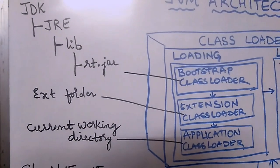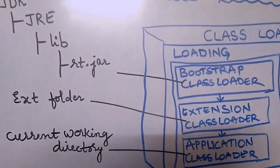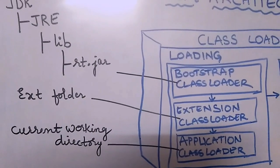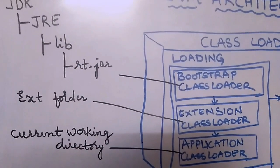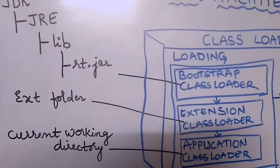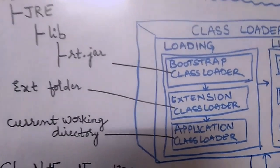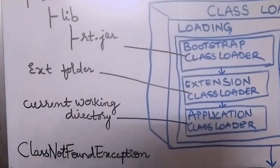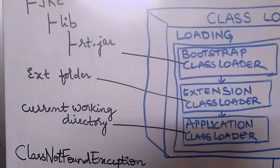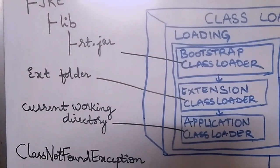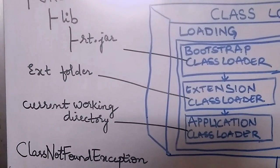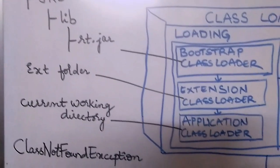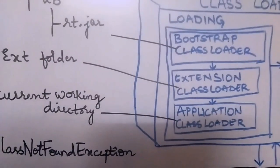The extension class loader is responsible for loading all the classes in the ext folder — inside lib there is an ext folder, and all the classes available there will be loaded by the extension class loader. The third one is the application class loader, also called the system class loader, and it is responsible for loading all the classes available in the application class path, which is the current working directory.